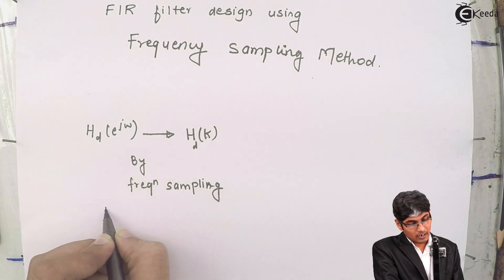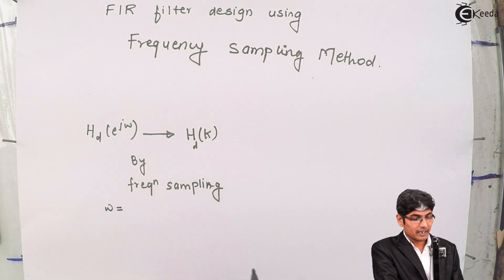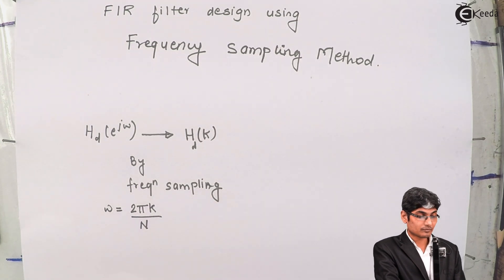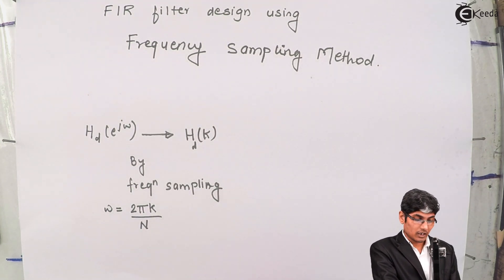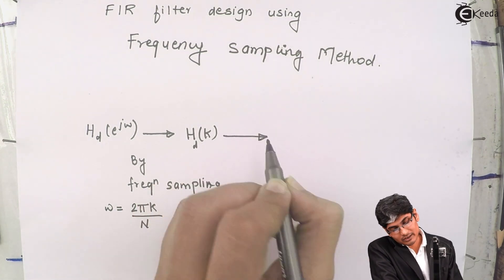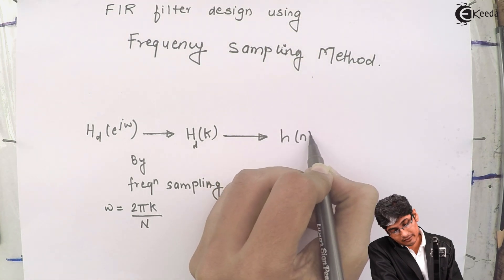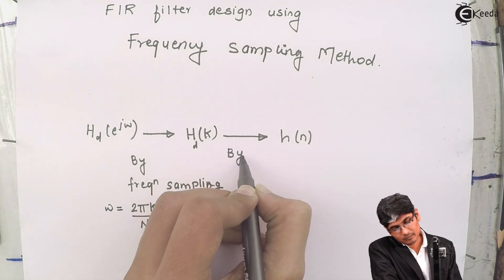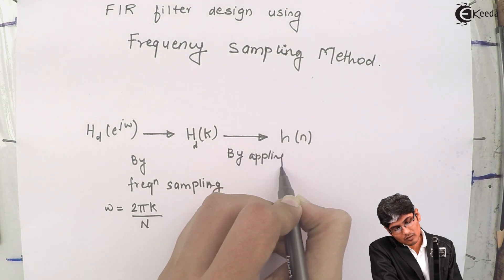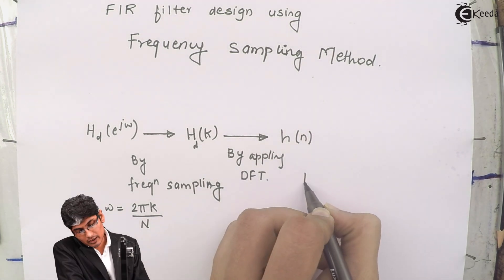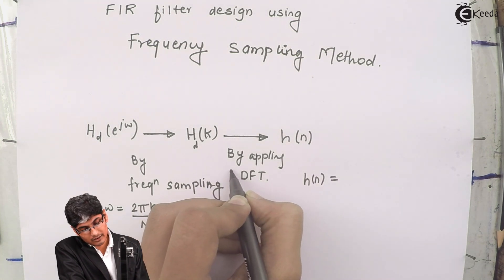In frequency sampling, we divide omega — or sample omega — at 2πk/N instances. After sampling, we get hd of k. From hd of k, we obtain h of n by applying IDFT.